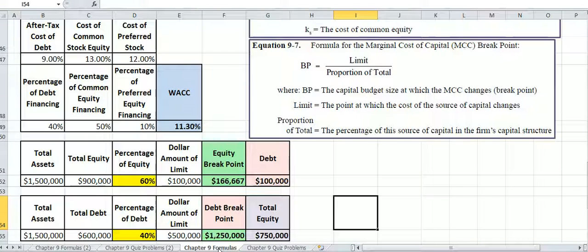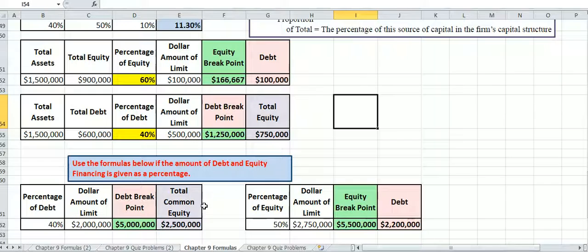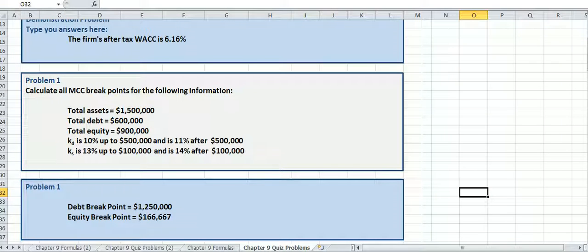So if we're looking at our debt breakpoint, it's a lot higher. So if we need to borrow more than $1,250,000, or if our total capital structure, if we're going to go over this limit, if we have a project that costs more than this that we're going to finance with both debt and equity, then we're going to need to borrow more than $500,000, because in order to maintain this 40%, because $500,000 is 40% of $1,250,000. So if we go over this in total, if our projects are going to cost more than this, then we're going to have to borrow more in order to maintain 40%, and that's going to be at a higher cost.